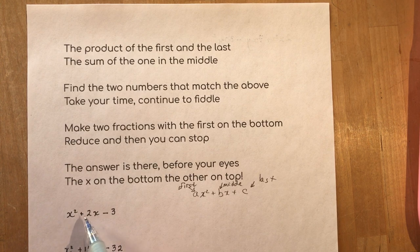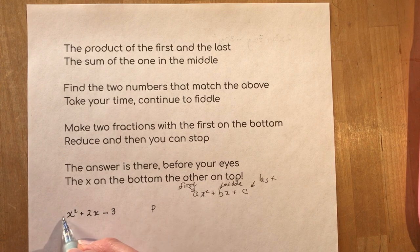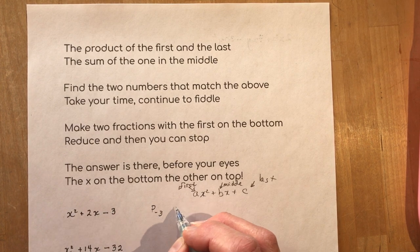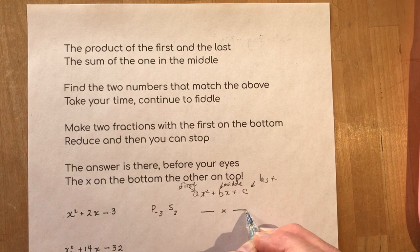Product of the first and last. What's product mean? Means you multiply them right? So I have a product of one times minus three. The sum of the one in the middle. Two. Find the two numbers that match the above.